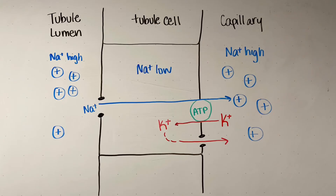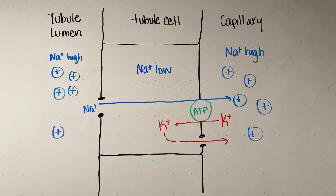Looking at this diagram, there is the tubule on one side — that's the nephron — and then a capillary on the other side. In between these there are tubular cells which line the nephron and separate the tubule from the capillary. In the proximal convoluted tubule, sodium will flow passively from the tubule lumen into the tubular cell because there is a higher concentration of sodium in the lumen than inside the cell. But once it gets into the cell, that's a completely different story — sodium has to go from a lower concentration inside the cell to a higher concentration inside the plasma.